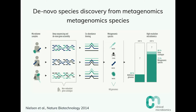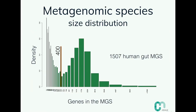Using metagenomic species instead of reference genomes, you can suddenly account for about 73% of your sequencing content. That's pretty good, because bacteria chromosomes are about 85% coding and we only count coding regions. We can identify 1,500 metagenomic species in humans — the large entities that we believe are bacterial genomes in most cases.